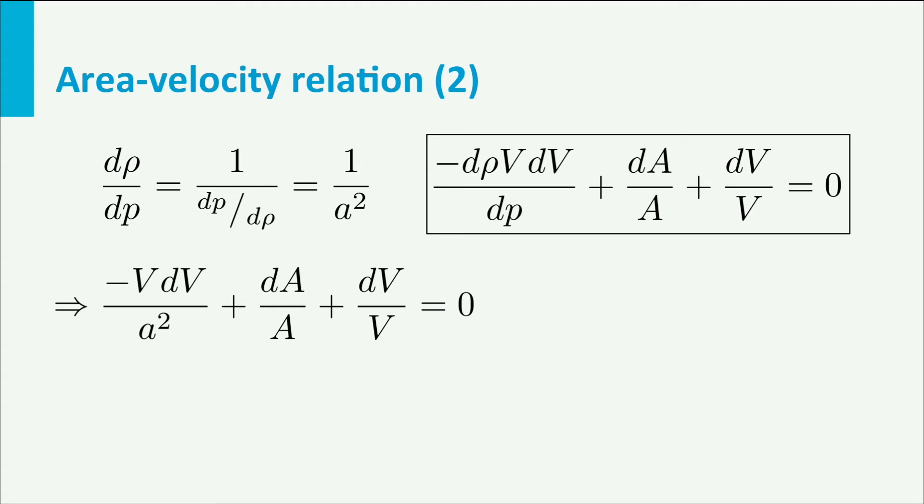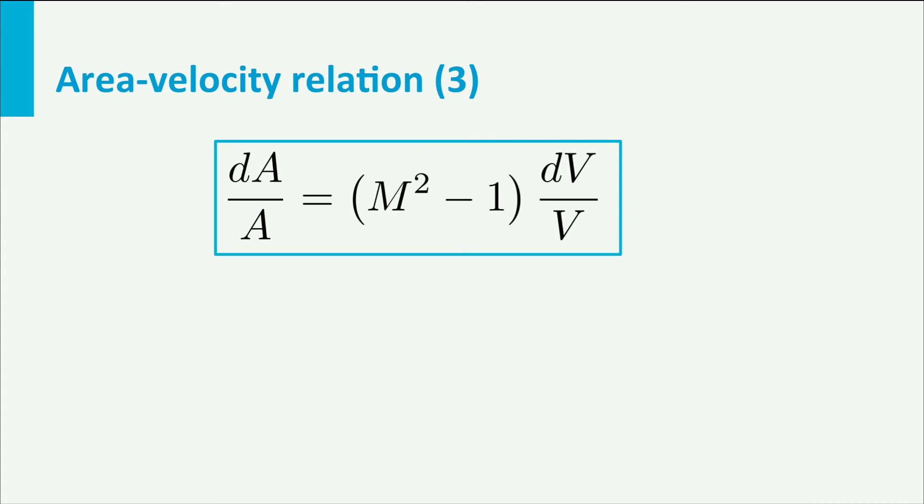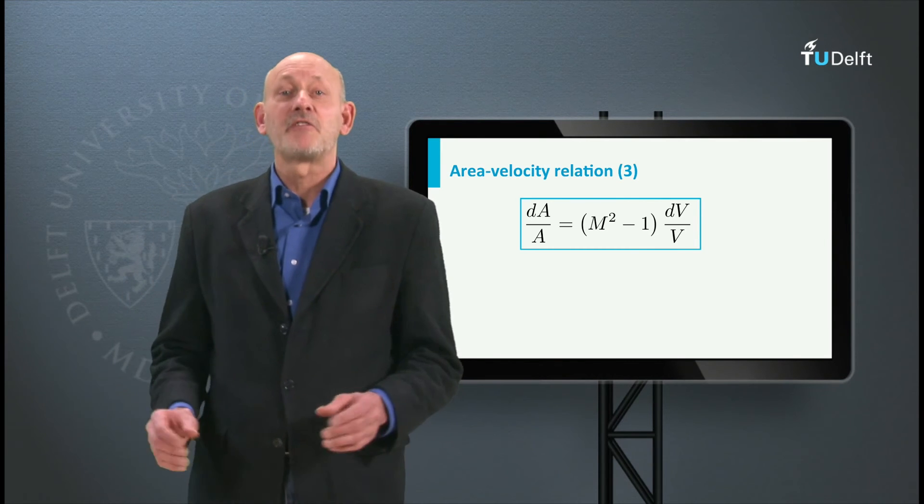And this can be written as dA over A equals VdV over A squared minus dV over V. Now if we multiply the numerator and the denominator of the first term on the right hand side with V we have dA over A equals V squared dV over A squared times V minus dV over V. We see a known combination of V and A, namely the Mach number. So finally we get dA over A equals M squared minus 1 times dV over V. This is called the area velocity relation.